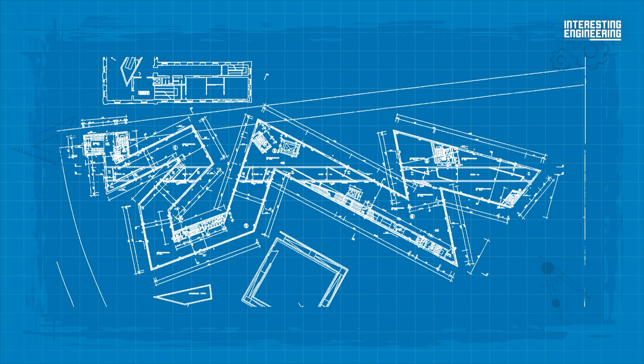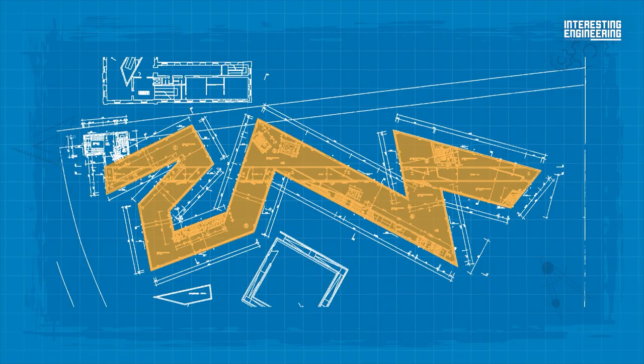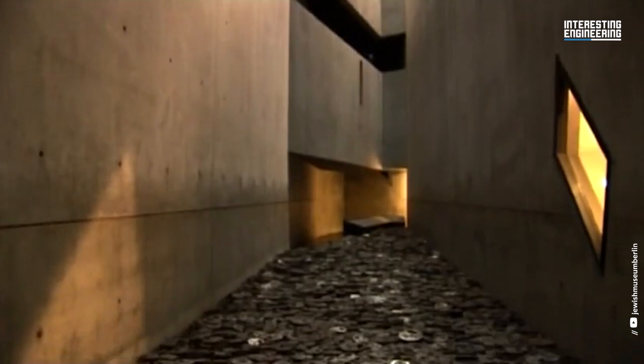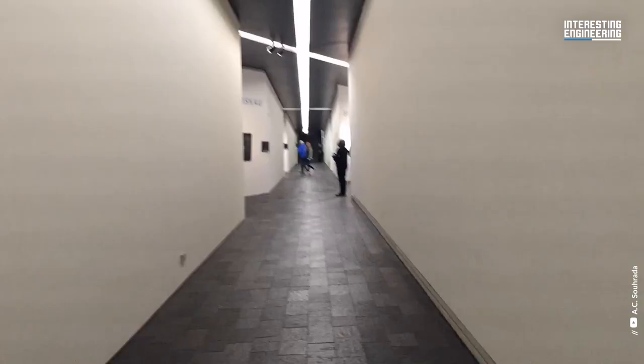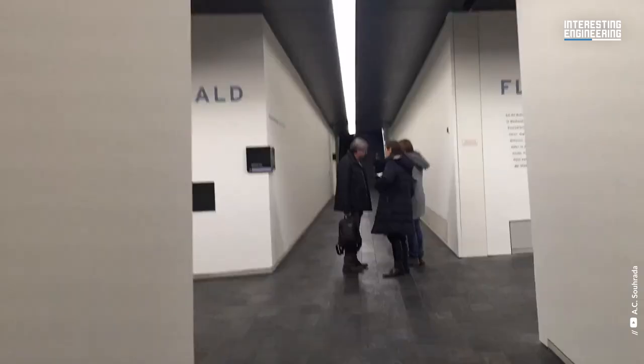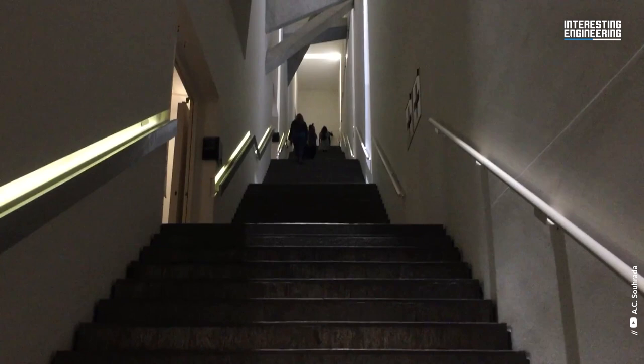For the floor plan, his design was based on two lines, with the structure zigzagging through the invisible line. The voids — empty spaces that pierce the building from the cellar to the roof — are located where the two lines meet. Inside the structure, sharp shapes, angular walls, and strange openings combine to provide unsettling rooms that are inspired by the erasure and void of Jewish life in Berlin following the Holocaust.